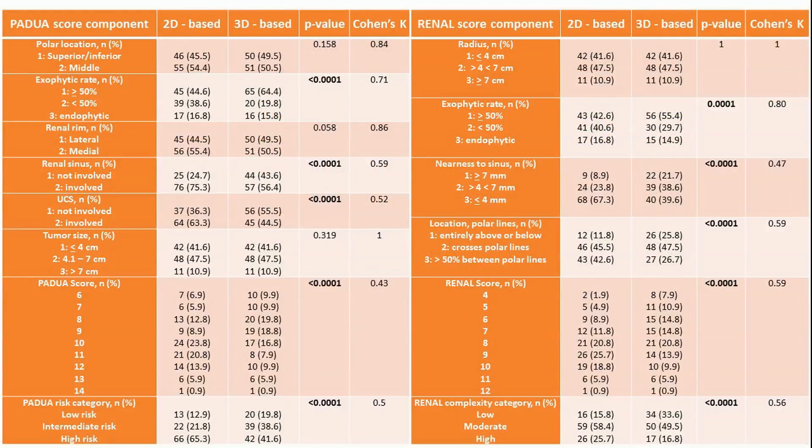101 patients were included and underwent partial nephrectomy performed by a single expert surgeon. Here we report the frequencies and proportions of patient distribution considering each variable, the total PADWEN renal score and their corresponding category, evaluated with both standard CT and 3D virtual models.